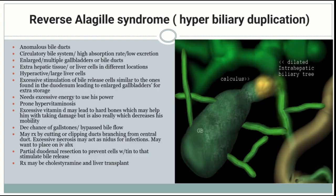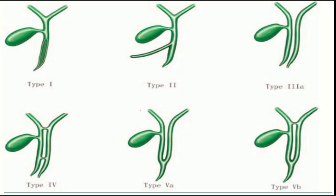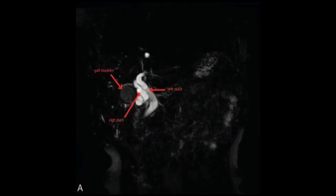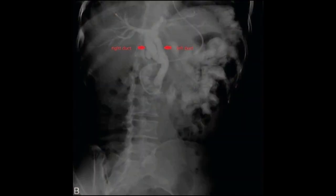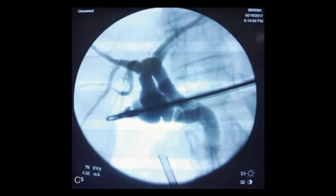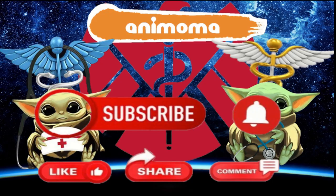Going back to this slide, it reiterates what was discussed and shows an illustration of the theoretical disease, hyperbiliary duplication. We will continue with the final portion of this presentation. These are the variations of congenital duplication of the common bile duct, if you're interested in this rare mutation, along with some imaging examples. Thank you for watching — please don't forget to like, comment, and subscribe below.